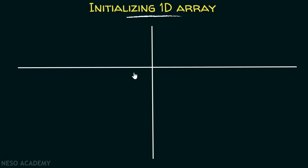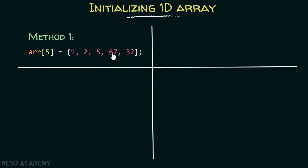There are basically four methods I am going to discuss in order to initialize a one-dimensional array. Here is method number one. There is no need to specify the data type if this array is already declared somewhere else. If it is not declared before, then you have to specify the data type. The length specified here is five, so it can accept a maximum of five elements. These elements are comma separated and you have to enter them inside the flower brackets.